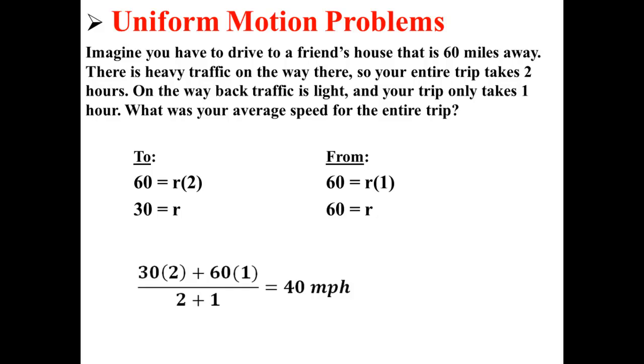That is, over the three hours of driving that you did, you traveled at an average of 40 miles per hour. That's an example of a uniform motion problem.